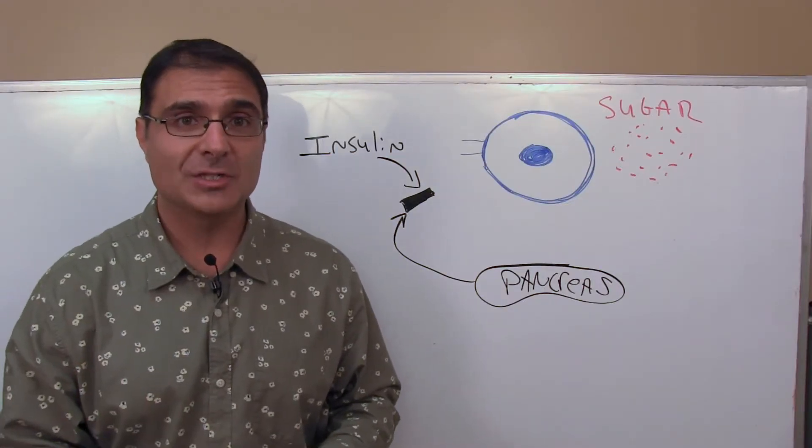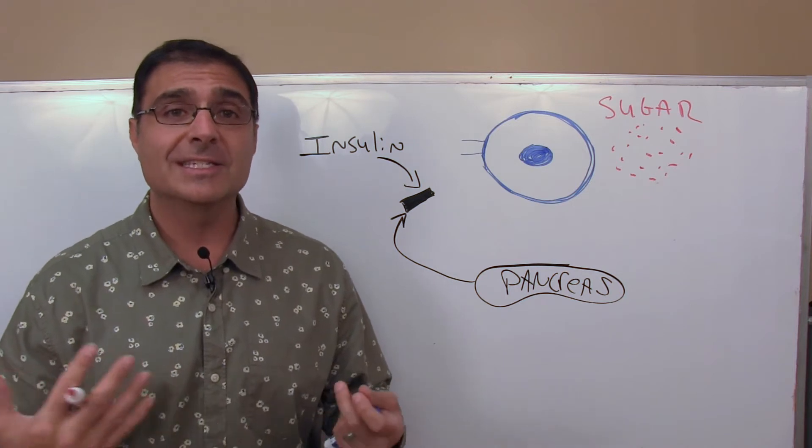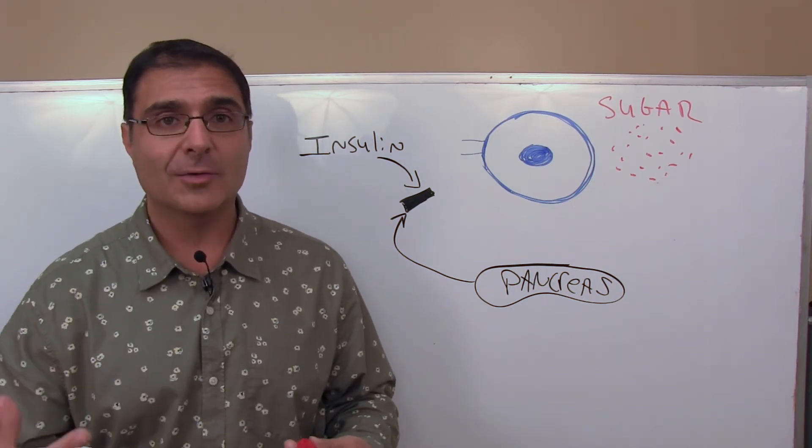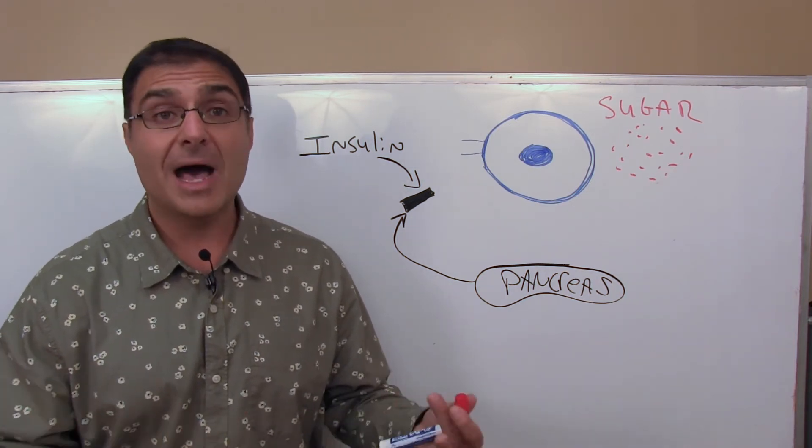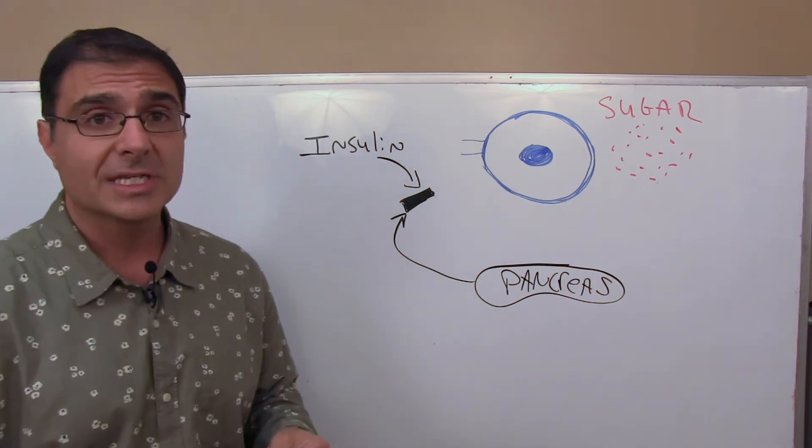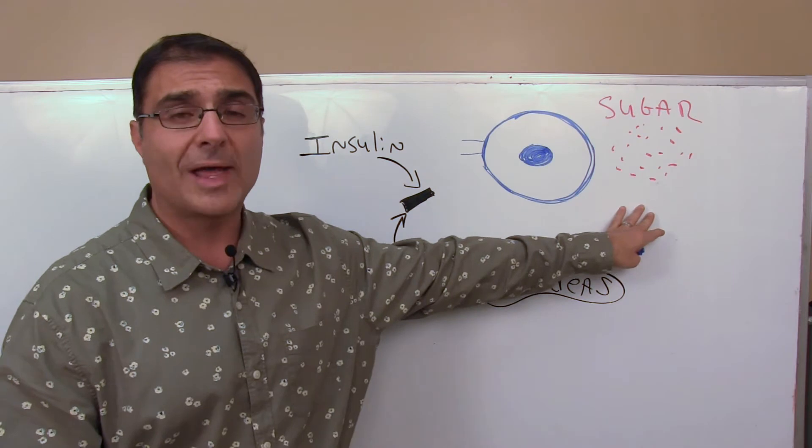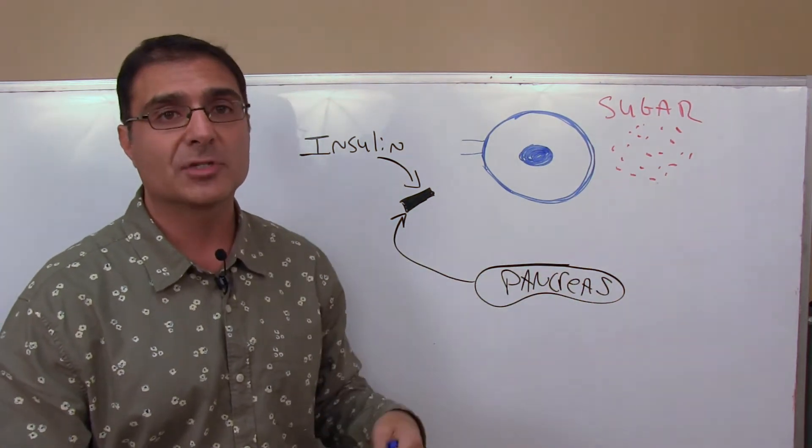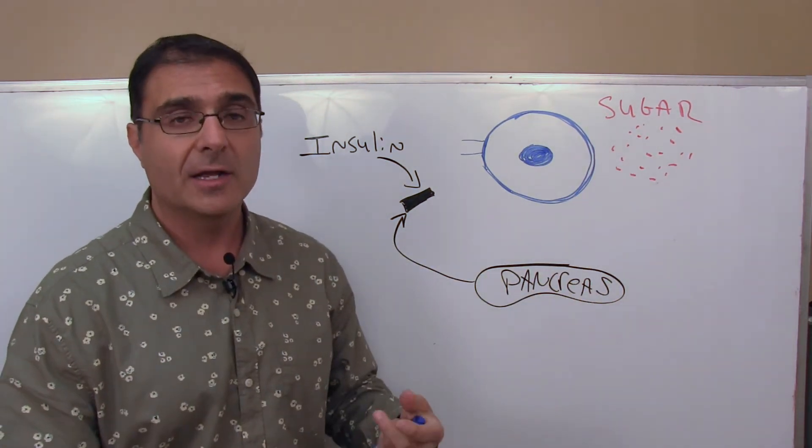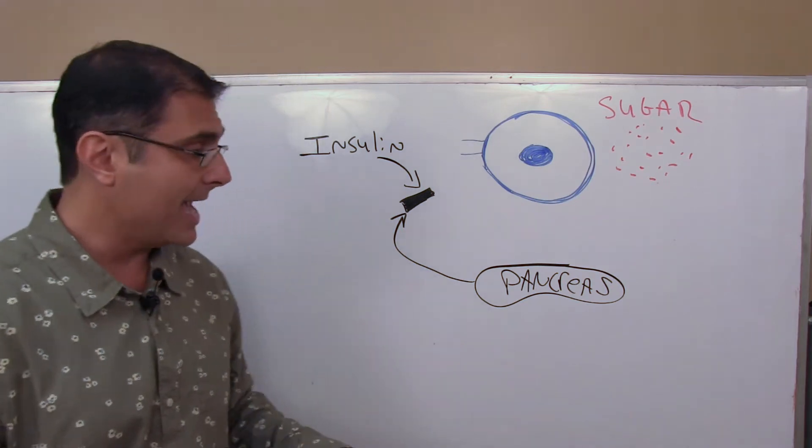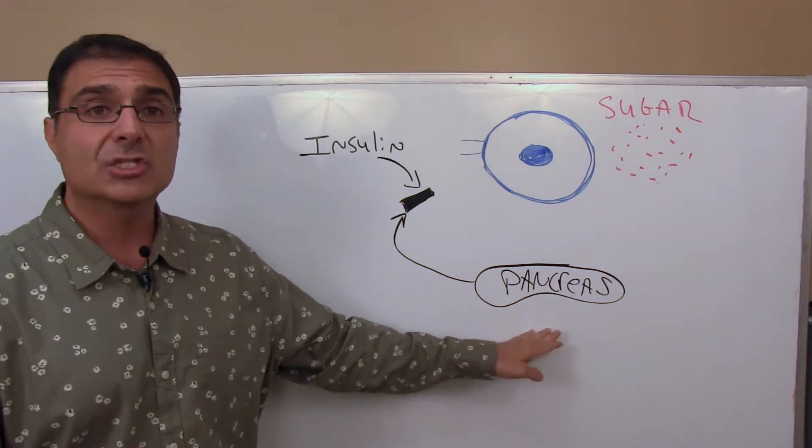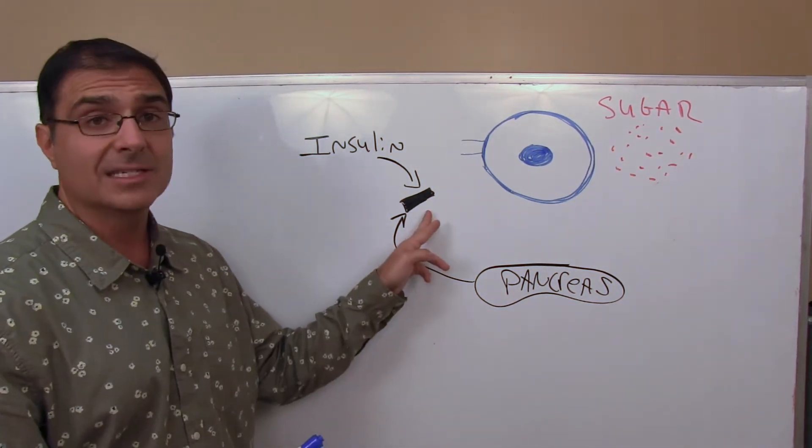Okay, so here's how type 2 diabetes works. So a person eats a bunch of carbohydrates like bread or they have a soda or pasta or whatever it is, even fruits, and as a result, their blood sugar levels go up. So all these little red dots over here, these are all going to represent sugar molecules in the blood that triggers the pancreas to make its hormone called insulin.